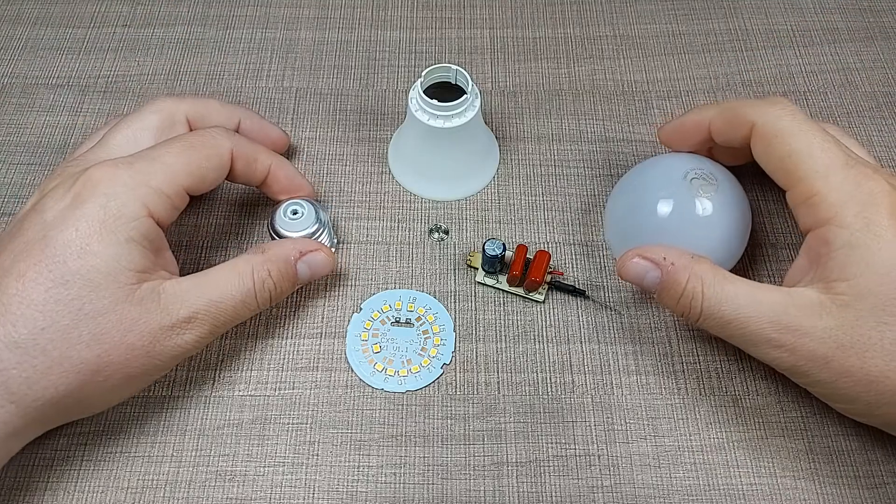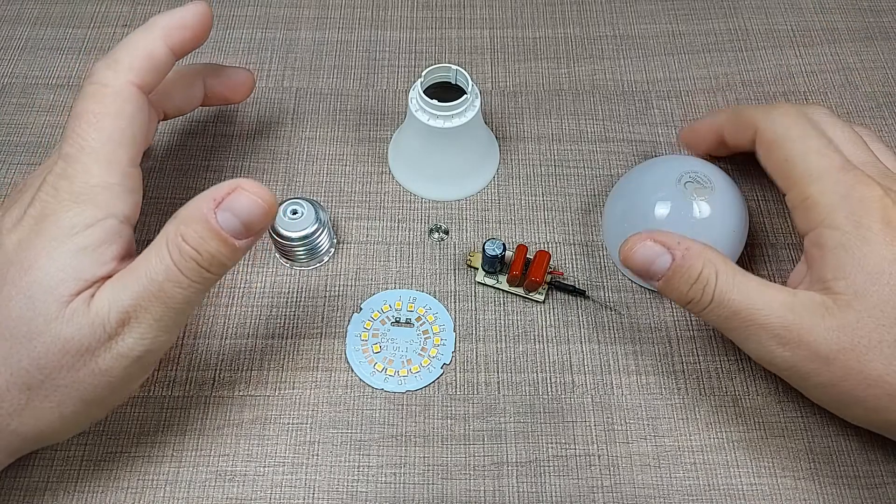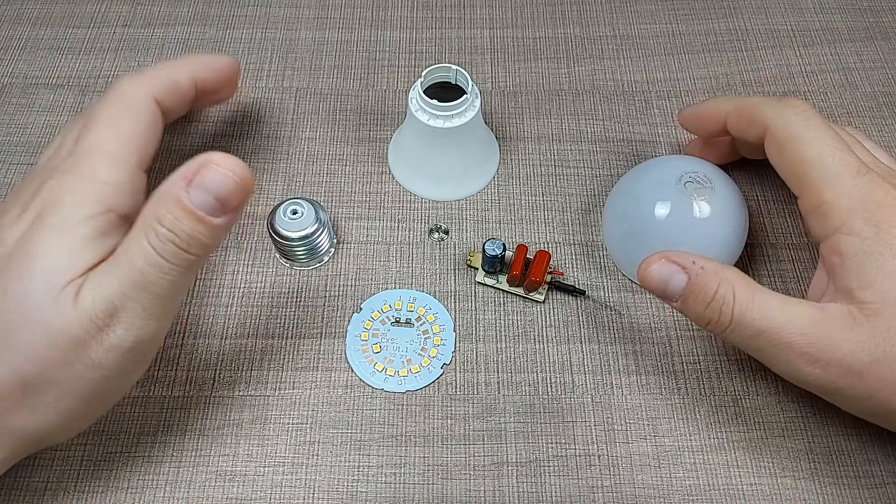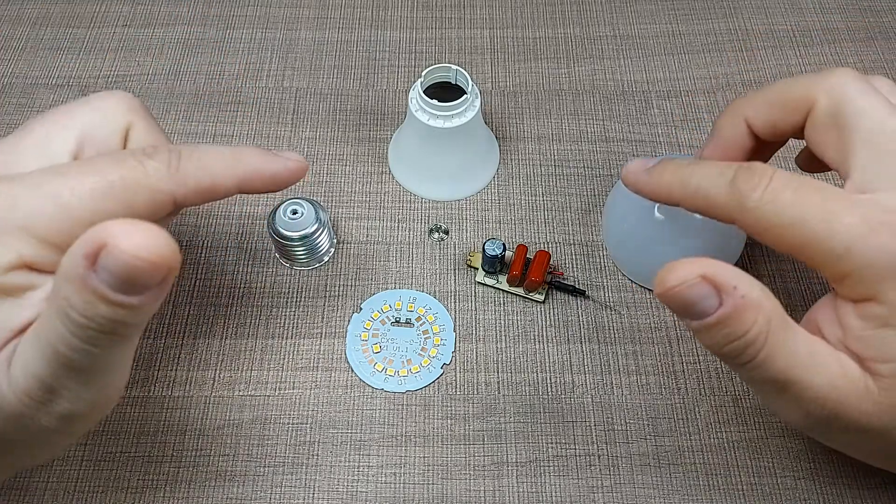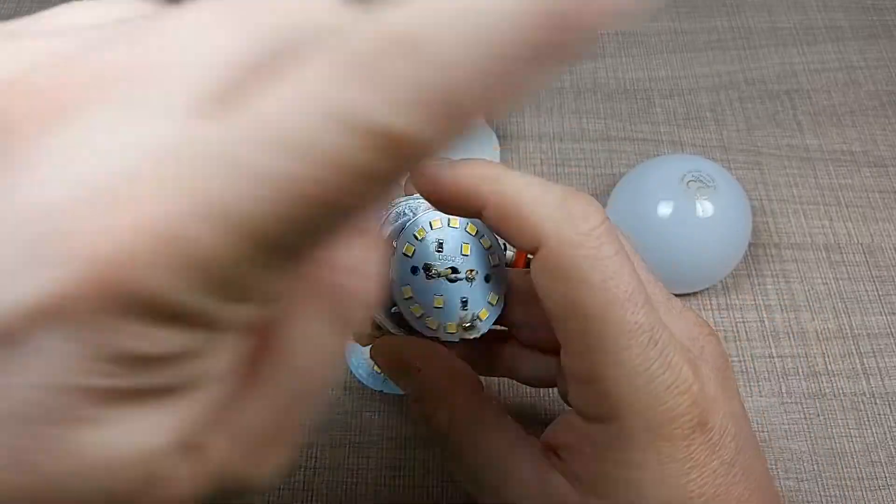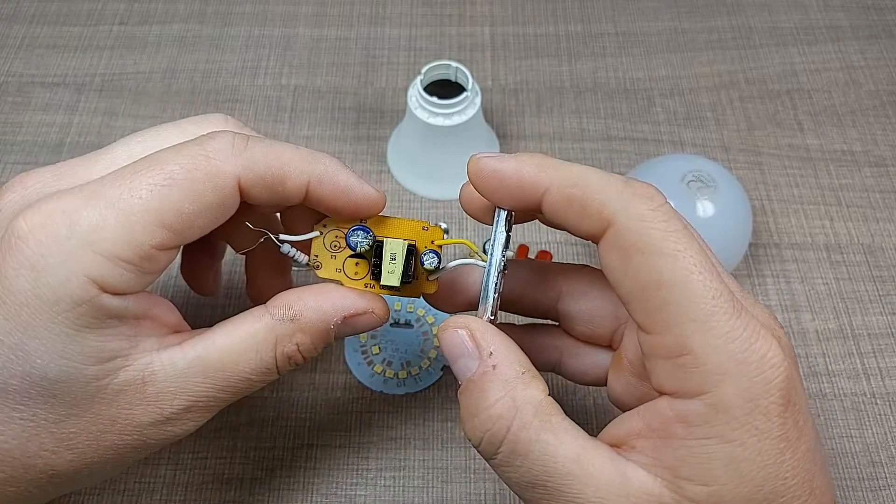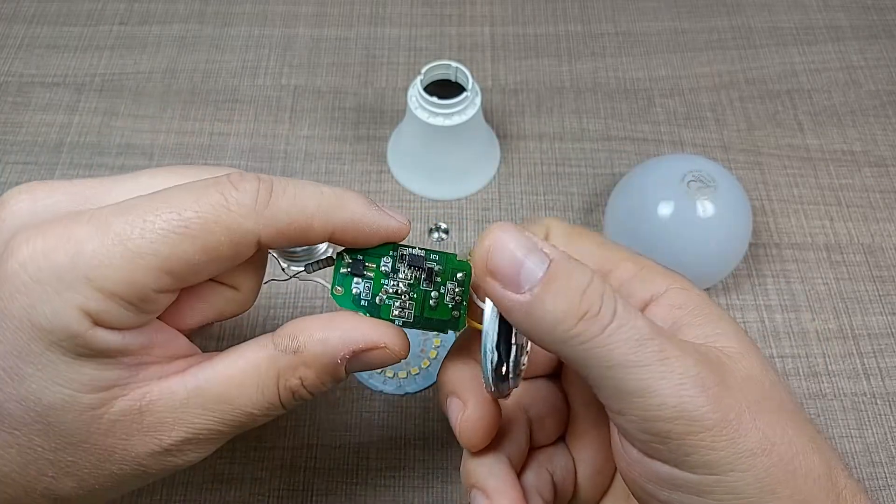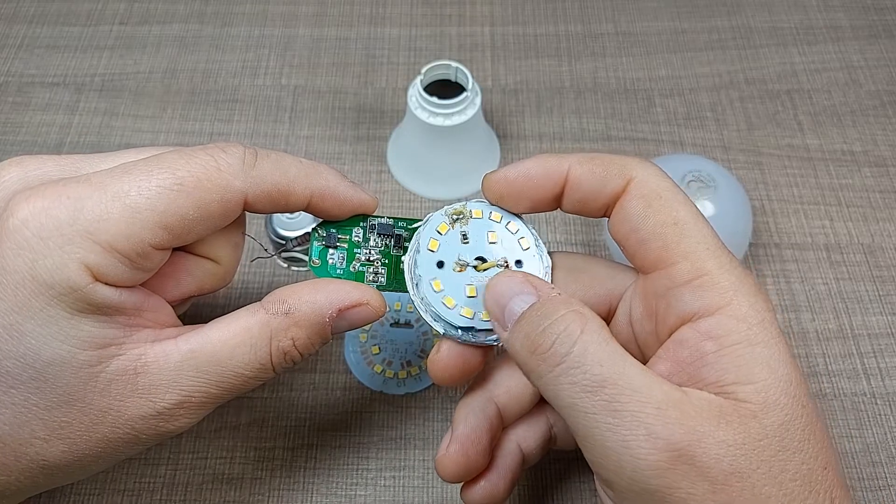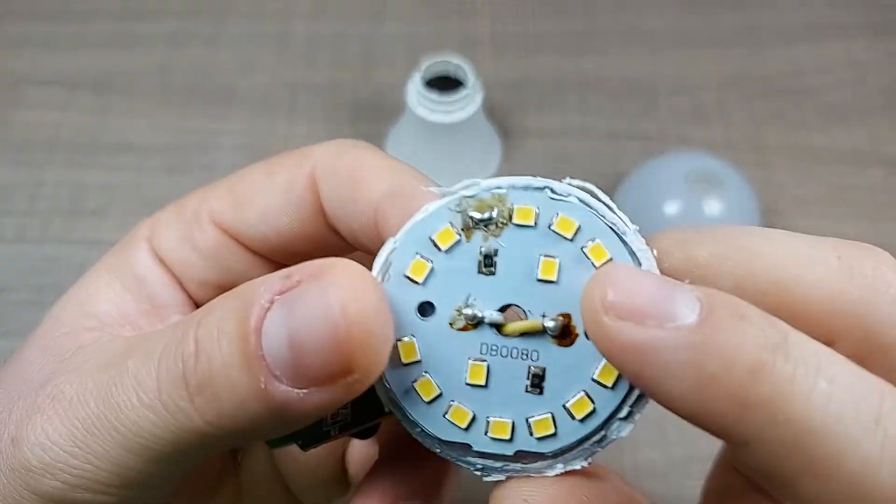Hi everyone and welcome back to Taste the Code. Today on the bench we have a post-mortem analysis of yet another failed bulb, and this one is a bit different than the ones we've seen before. Check the video up here where they use a chip to regulate the current and drive the LEDs with constant current.